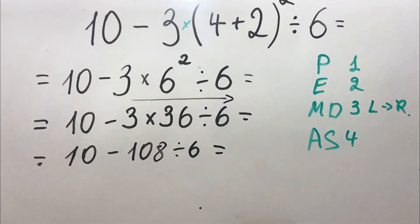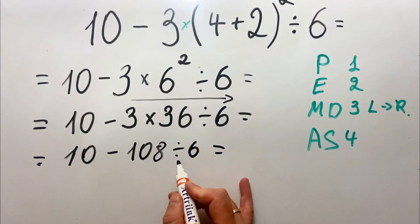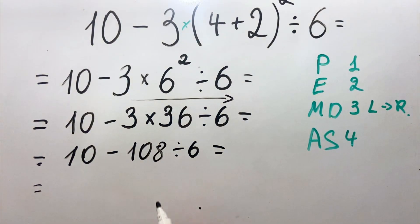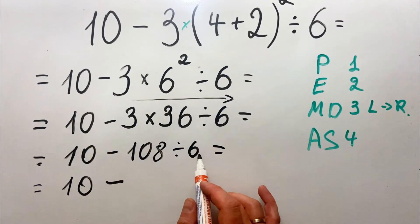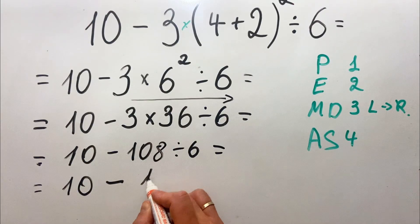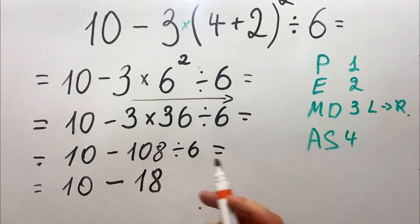Now we do the division. So we have 10 minus 108 divided by 6, which equals 18, and this equals minus 8.